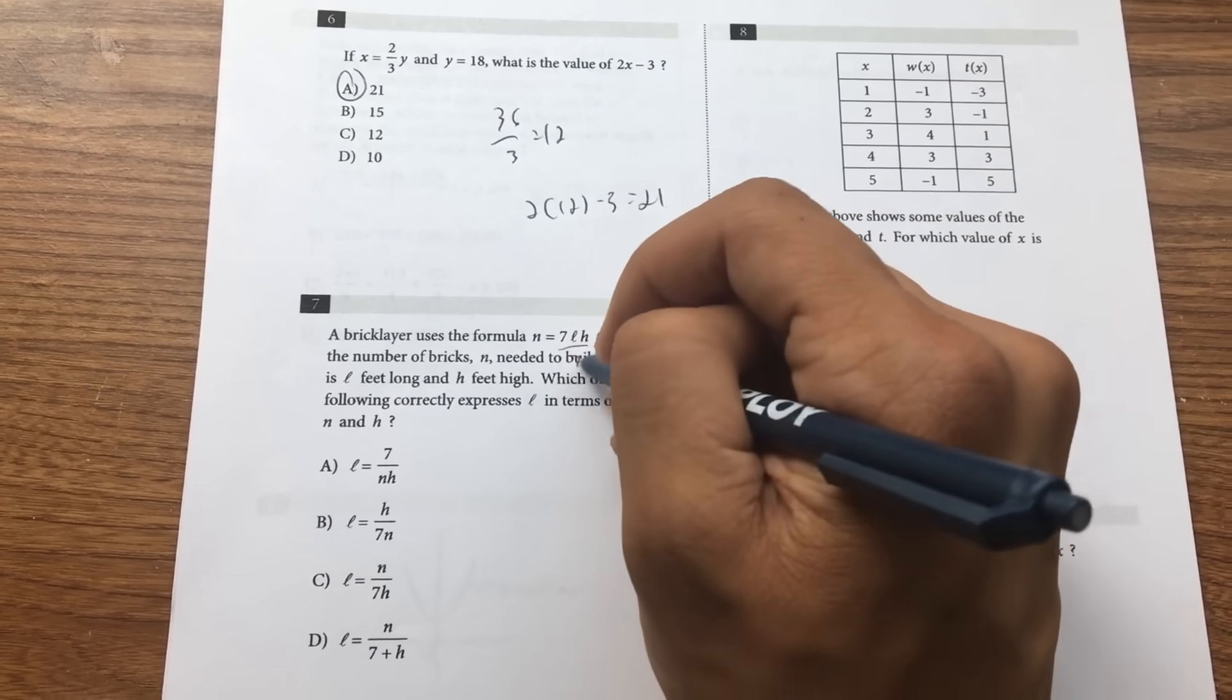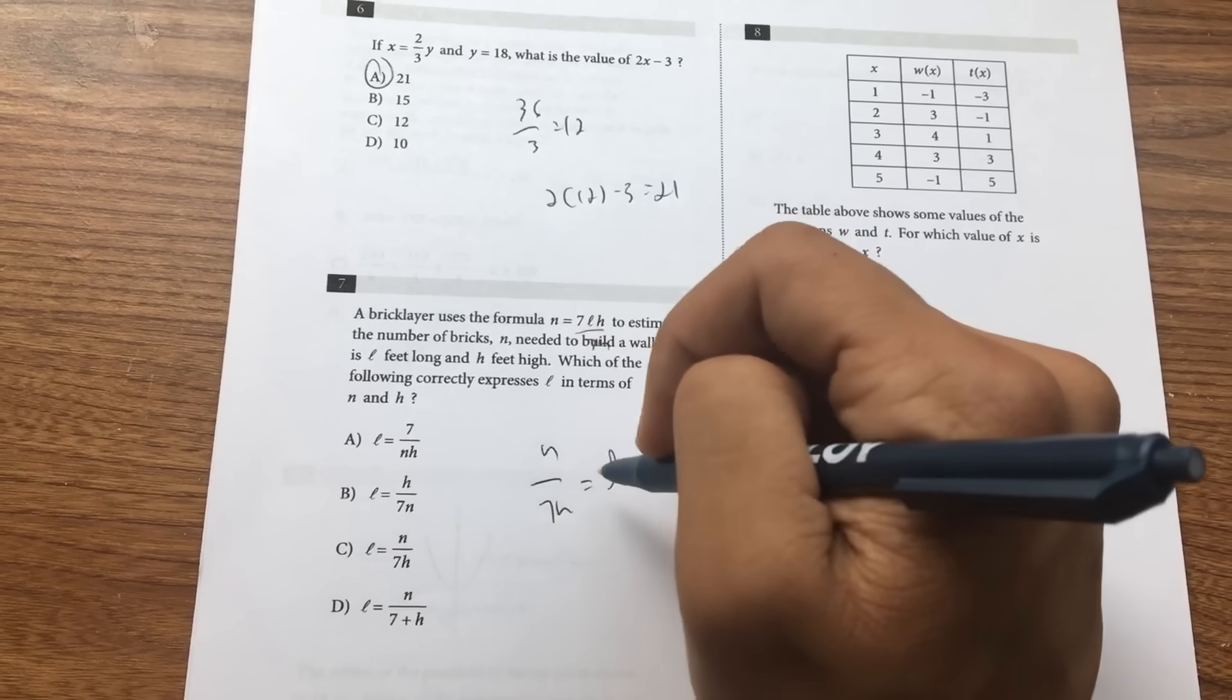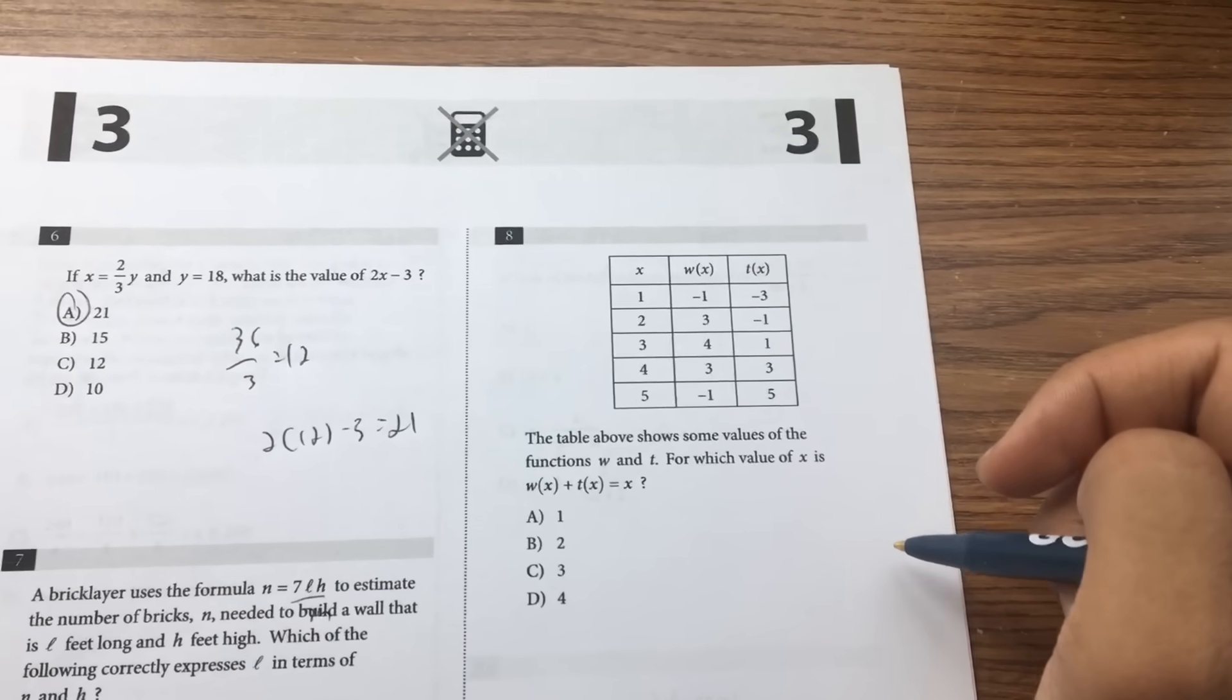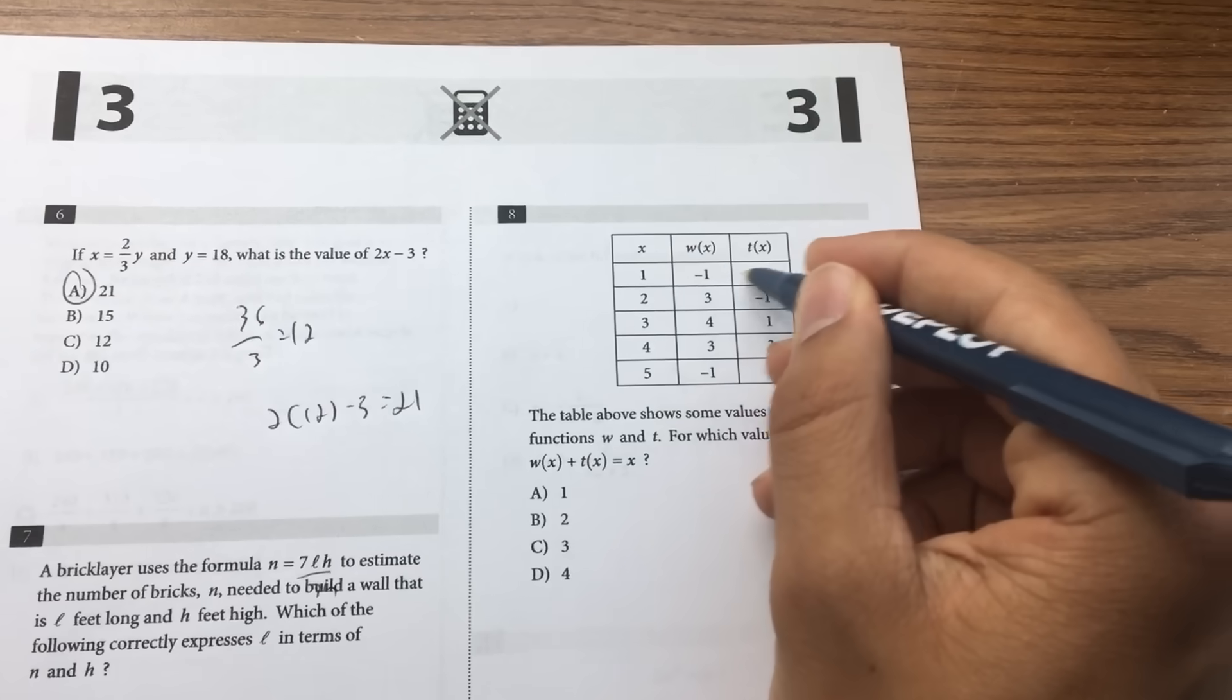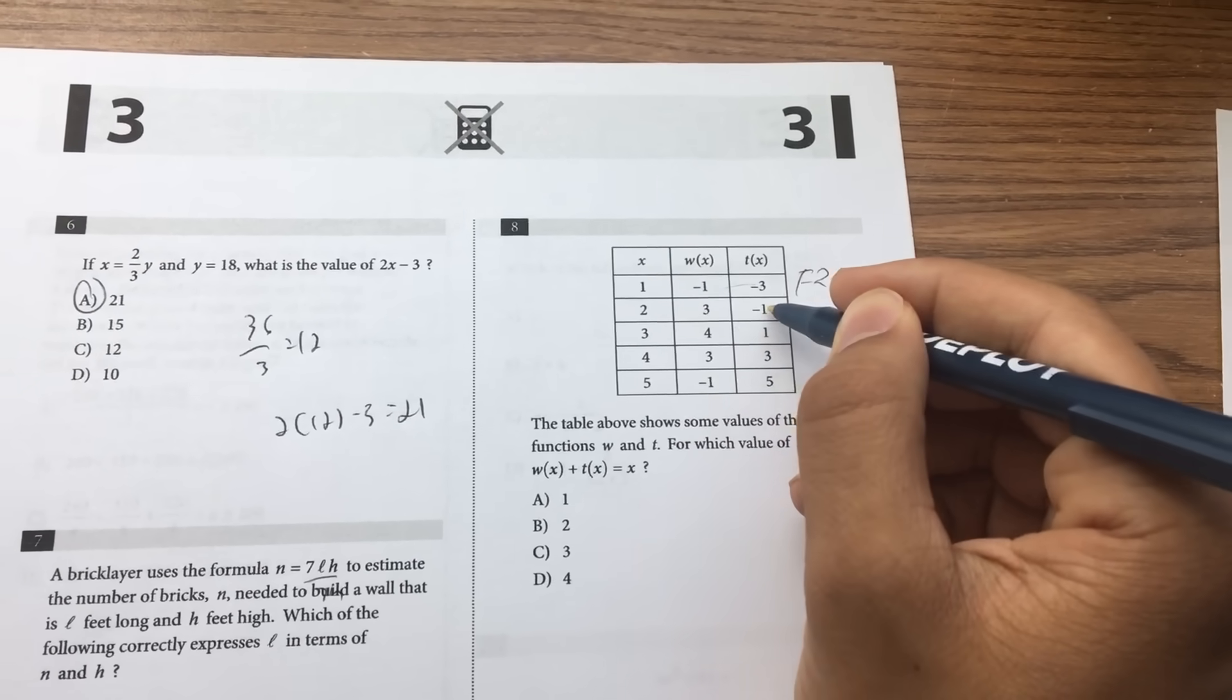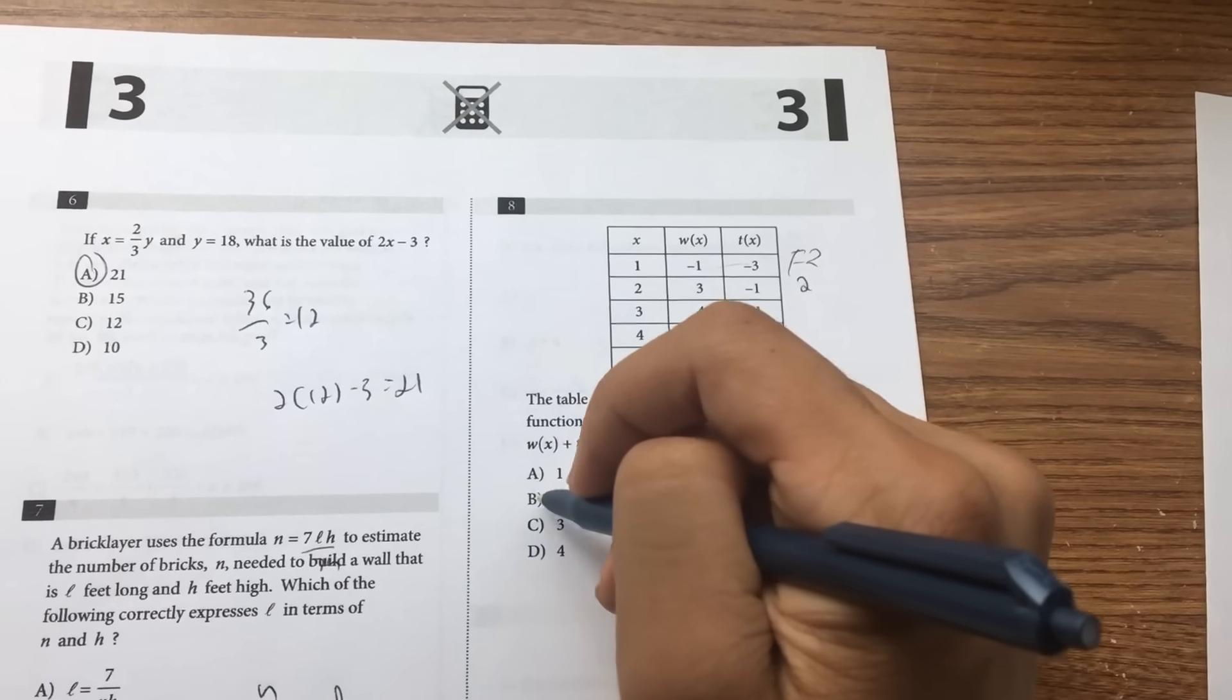Number 8, it's trial and error. Plug in what they give you, try 1. This is not equal to... 3 plus negative 1 equals 2, 2 is equal to 2, so answer is 2.